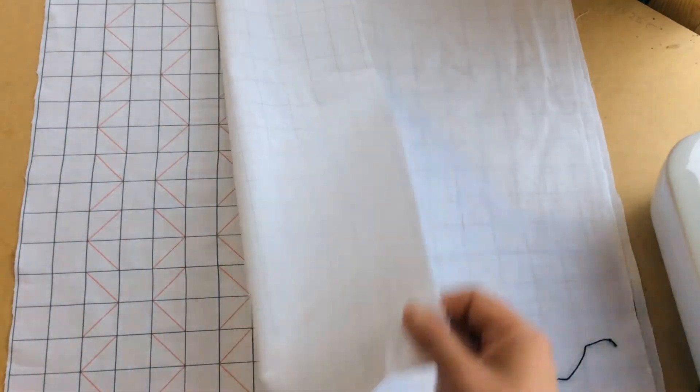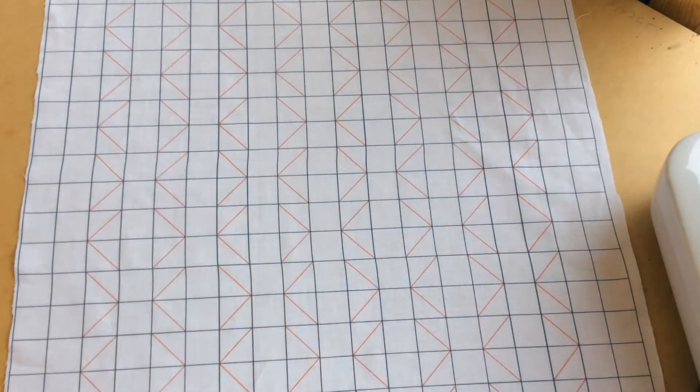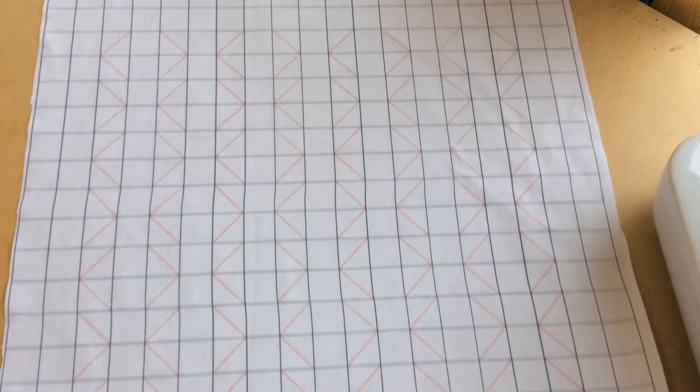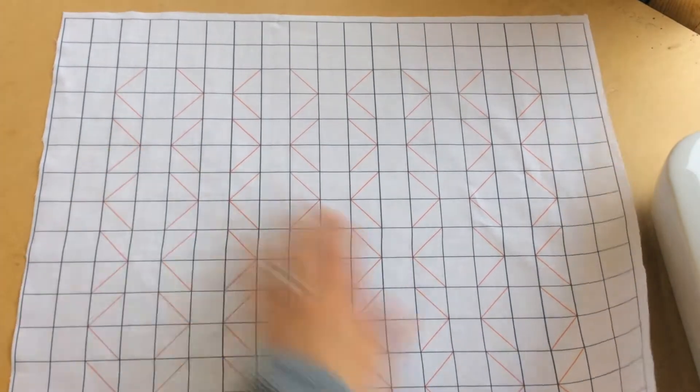I'm going to switch to this piece which has got exactly the same pattern on but with slightly heavier print so you can see it on the camera. All you're going to do is follow the lines that are printed on here. We're going to start up in this top corner.